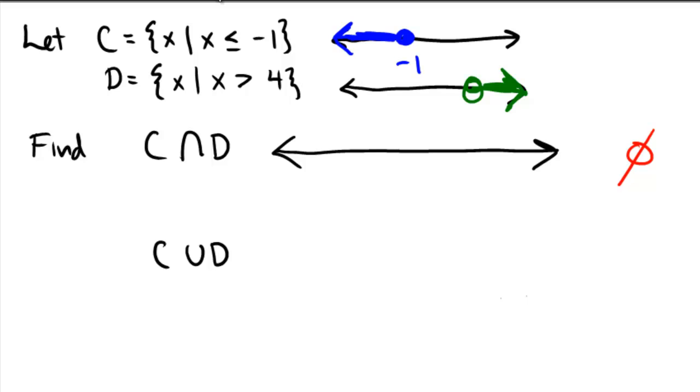In the bottom one, we have C union D. So here we want the ones that are shaded in either the top or the bottom. So top, blue, gives us the numbers from negative 1 on down. And the top, in the green, gives us the numbers going from 4 and upward.